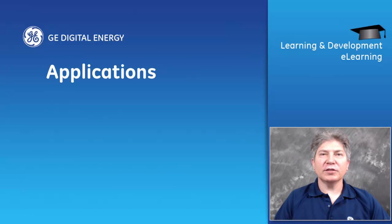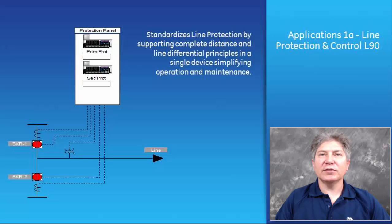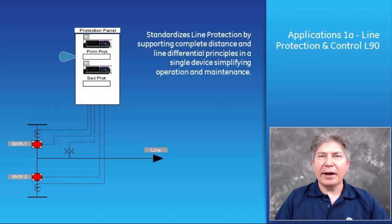Applications: In this portion we will discuss the additions, changes, and improvements that occur in specific applications. Line protection and control in the L90: In the previous firmware versions, the L90's main task was the line differential. The L90 now shares the core of the D60 relay, which is the distance function, providing a high degree of sensitivity and selectivity for all types of faults. The distance function comes with 5 zones of phase and ground distance and pilot schemes, allowing standardization of transmission applications into a single box.